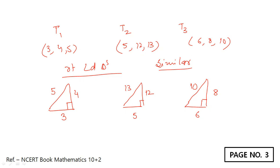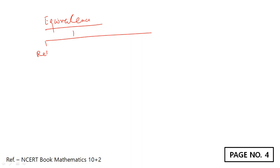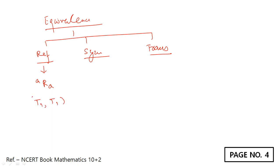Now, what about the equivalence relation? An equivalence relation comprises three parts: reflexive, symmetric, and transitive. In the case of reflexive, A is in relation to A. This means T1 and T1 — both should be right-angled triangles. Since both triangles are the same, T1 is in relation to T1, and T1 is a right-angled triangle. This means the reflexive condition is true.